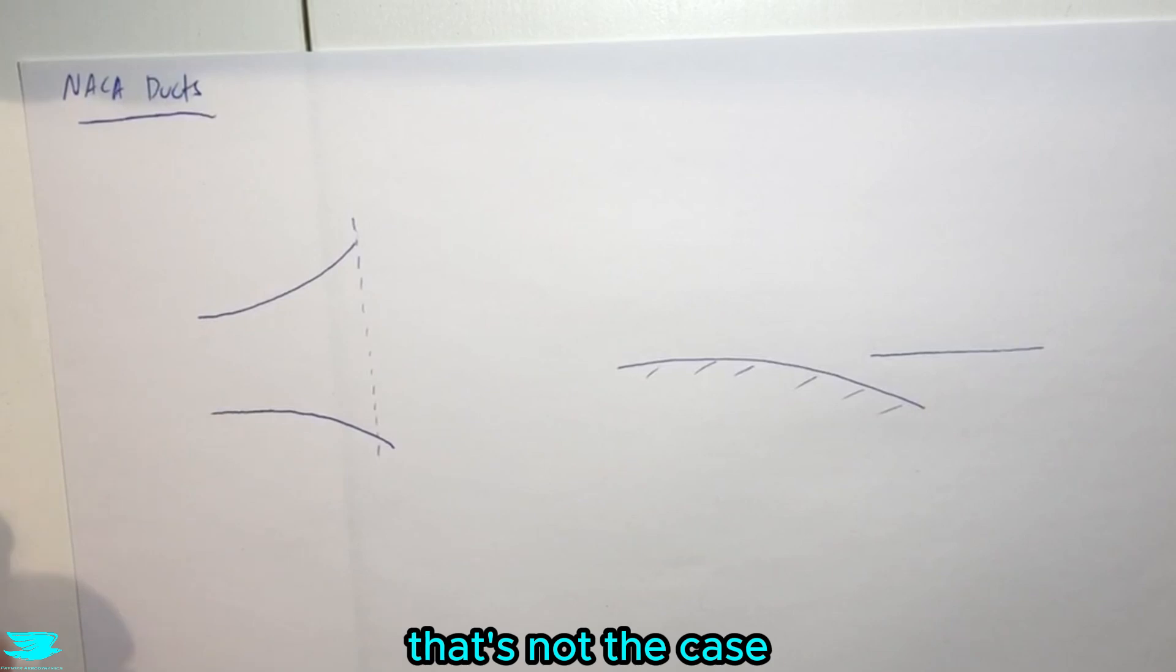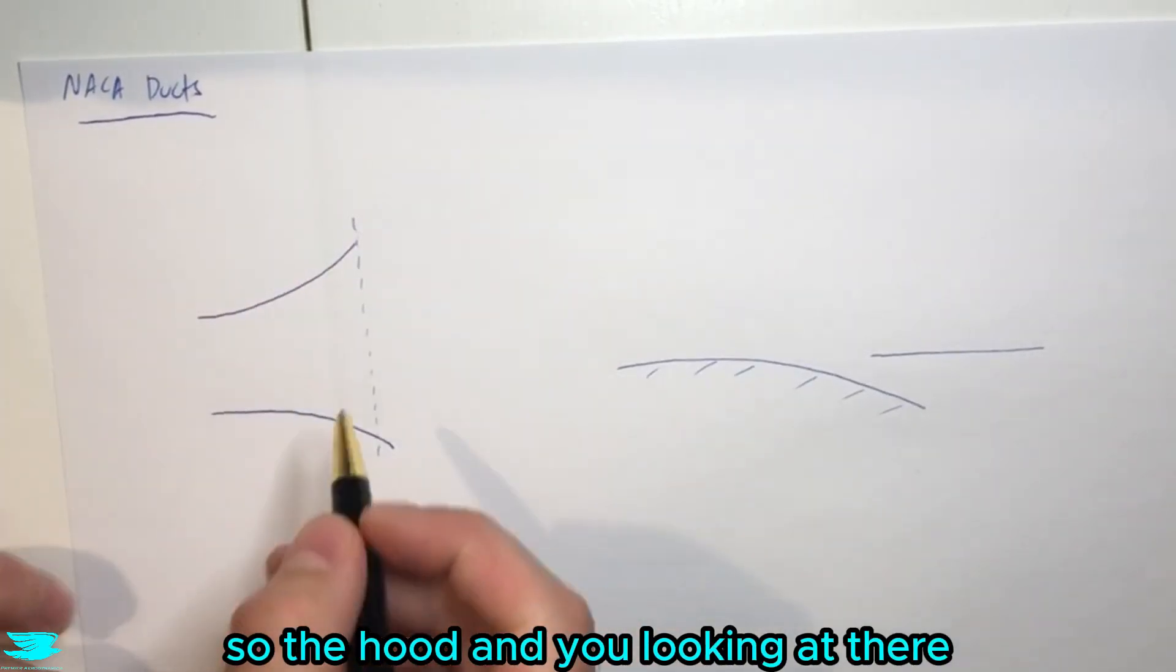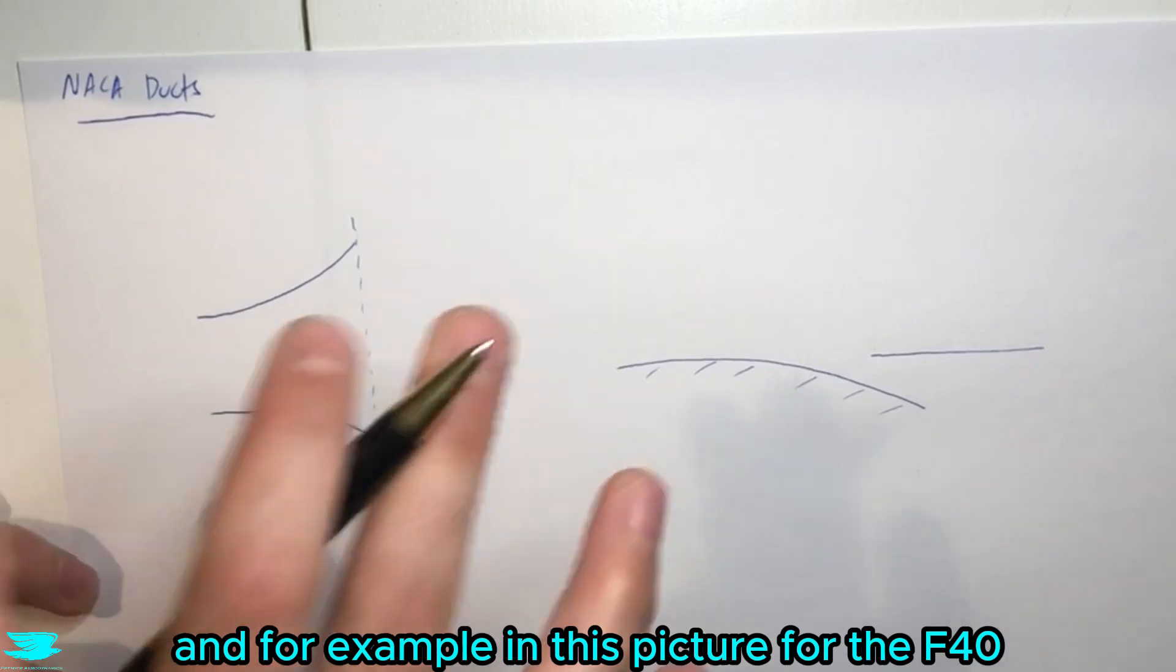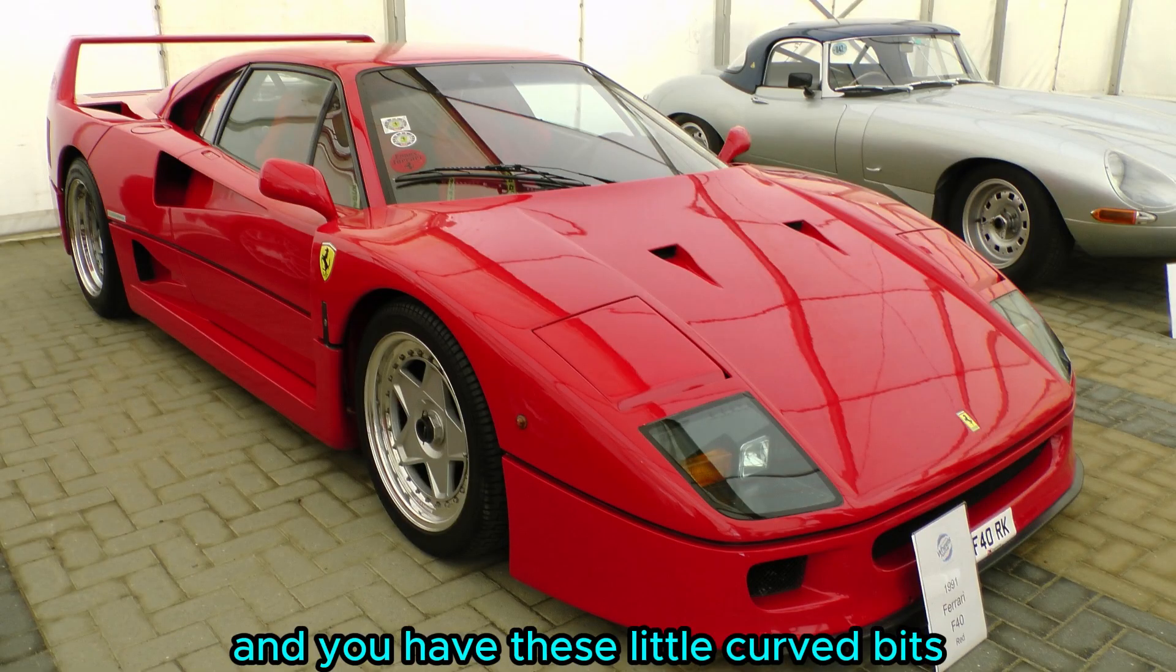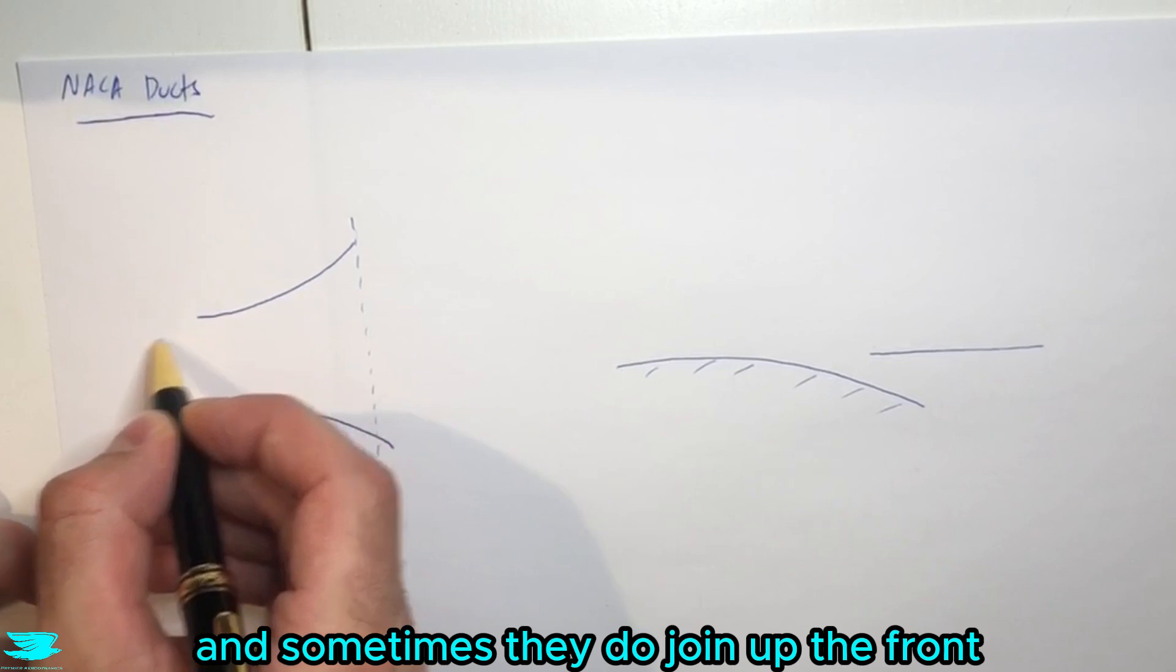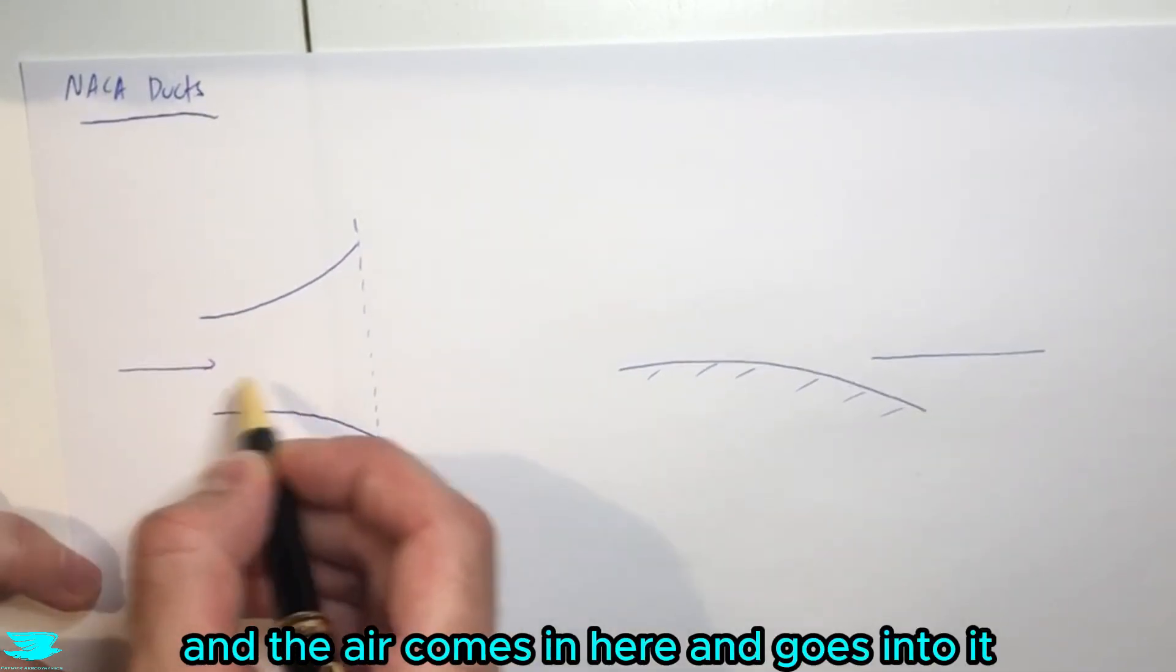With NACA ducts, that's not the case. So let's say we're looking down on the front of the car, so the hood, and you're looking at there. For example, in this picture for the F40, you have these little curved bits, and sometimes they do join up the front, sometimes not. And the air comes along here and goes into it.